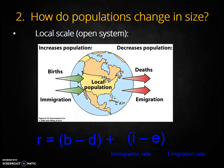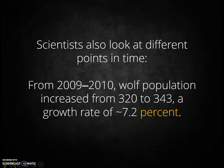Scientists would need to estimate or calculate the birth rate, death rate, immigration rate, and emigration rate in order to determine the growth rate of the population. Notably, scientists can also determine the population growth rate by looking at population numbers at two points in time. For example, from 2009 to 2010, the wolf population increased from 320 to 343. To calculate the growth rate, we take the difference of the two populations — 23 — and divide it by the initial population of 320, then multiply by 100 to get a percent. During this one-year time frame, the wolf population increased by approximately 7.2 percent.